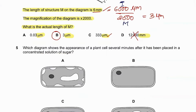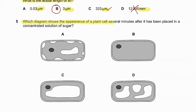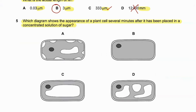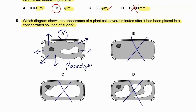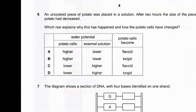Question number five: which diagram shows the appearance of a plant cell several minutes after it has been placed in a concentrated sugar solution? In a concentrated sugar solution the plant cell loses a lot of water, so the cell membrane starts to collapse away from the cell wall — this is plasmolysis. Only option A shows plasmolysis, so 5A is the correct answer.